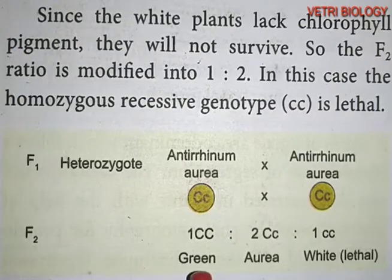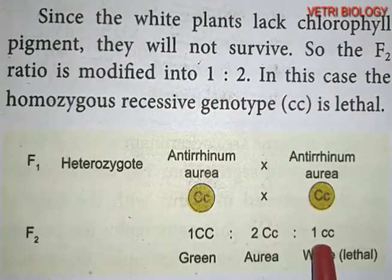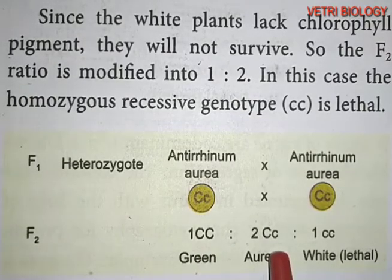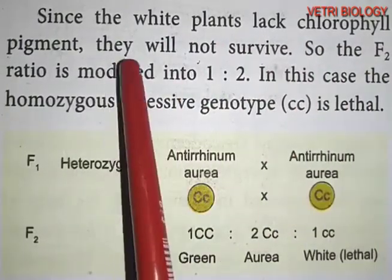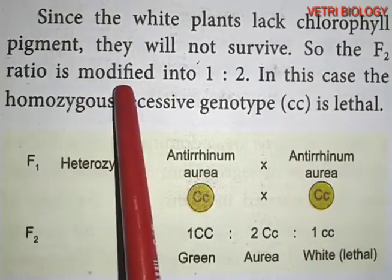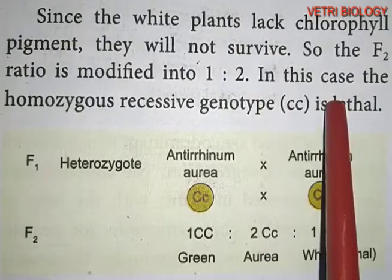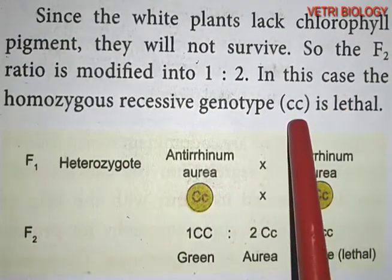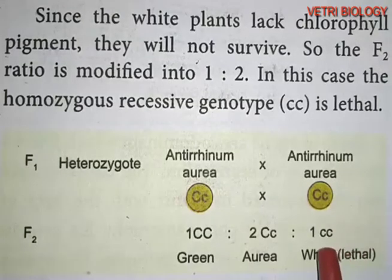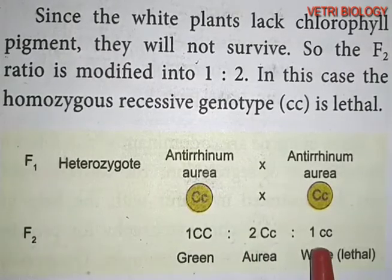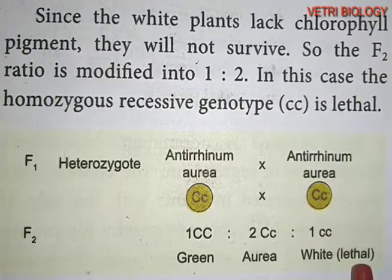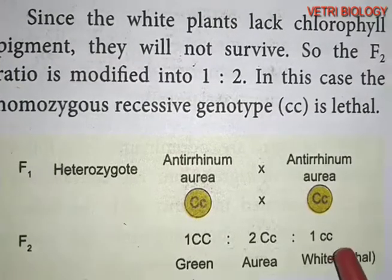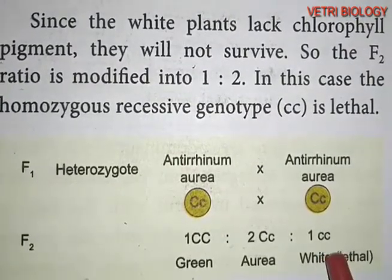With the ratio of 1:2:1 — that is, 1 CC : 2 Cc : 1 cc — since the white plants lack chlorophyll pigment, they will not survive. So the F2 ratio is modified into 1:2. The homozygous recessive genotype cc is lethal. The white plant has no chlorophyll and cannot survive, so the phenotypic ratio becomes 1 green : 2 aurea plants. This is why the white plant genotype is a lethal genotype — it is the recessive gene in homozygous condition that acts as the lethal gene.